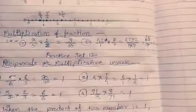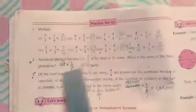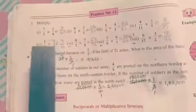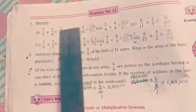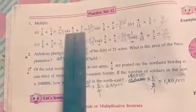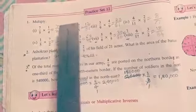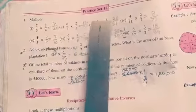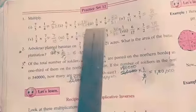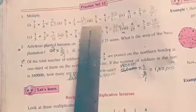Practice exercise 12, question number 1 — Multiply. First: 7 upon 5 into 1 upon 4. 7 × 1 = 7, 5 × 4 = 20, answer is 7 upon 20. Second: 6 upon 7 into 2 upon 5. 6 × 2 = 12, 7 × 5 = 35, so 12 upon 35 is the right answer.